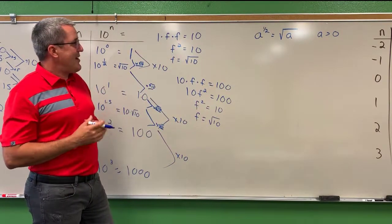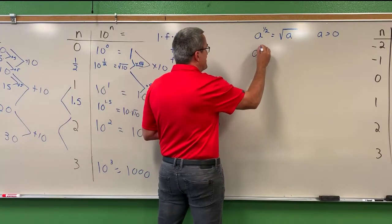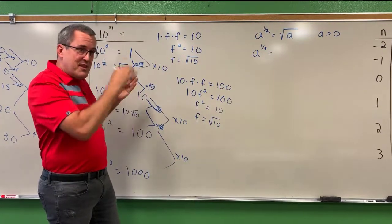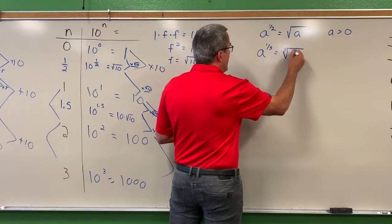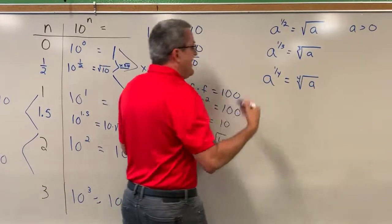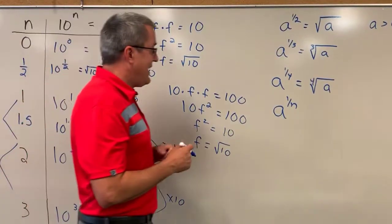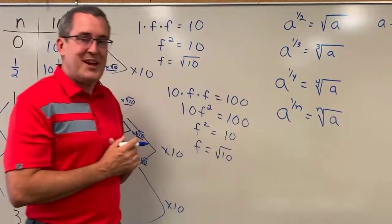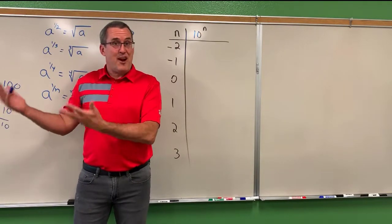We'll say this is valid for a greater than zero for now. In general, if you have a base raised to the one-third power, the common factor reasoning shows it's the cube root of a. If you have a to the one-fourth power, that's the fourth root of a. In general, a to the one-over-n power — where n is a positive whole number — is the nth root of a. So that's how we handle exponents that are fractional in nature.